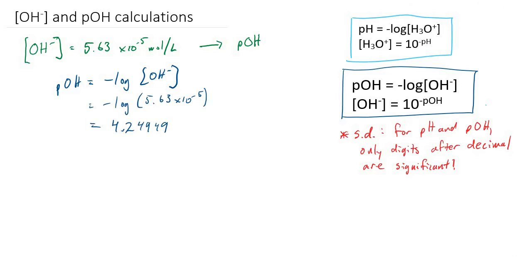Again, no units on pOH. But looking at significant digits, we originally had a number which had three significant digits, and for pOH only the digits after the decimal will count. So we can say this is equal to about 4.249 for our pOH.